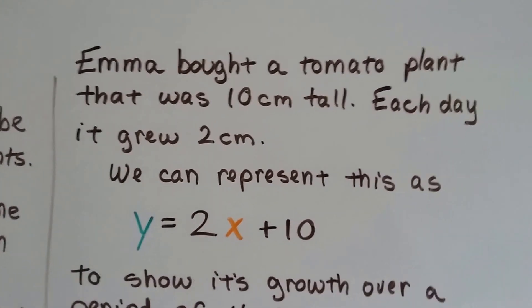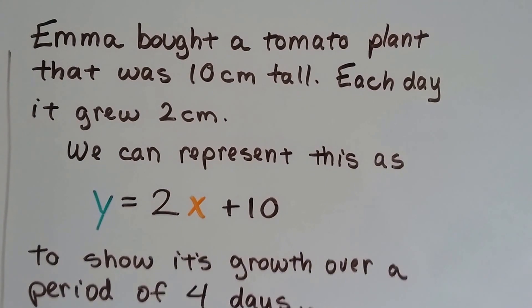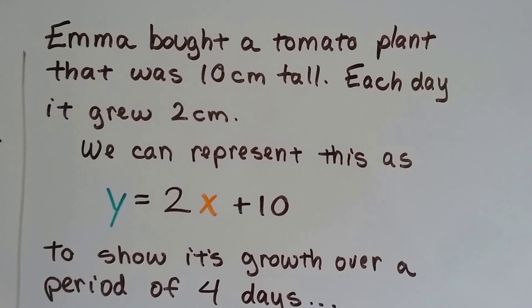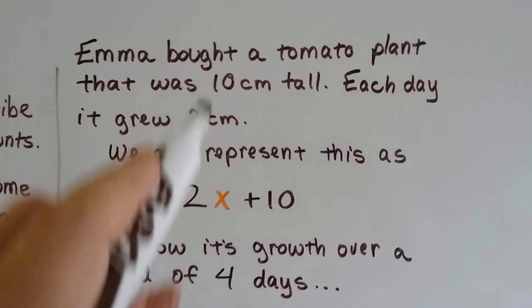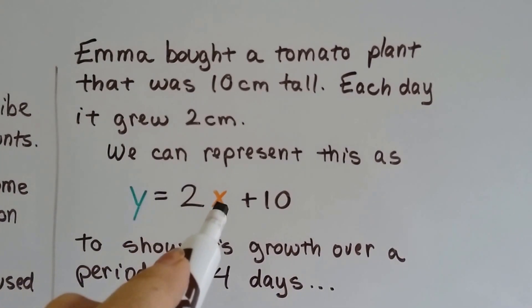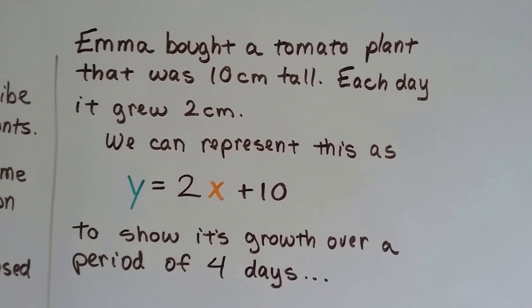Emma bought a tomato plant that was 10 centimeters tall, and each day it grew 2 centimeters. We can represent this as y equals 2x plus 10. The 2 is the 2 centimeters, x is each day, and the 10 is the 10 centimeters it was when she first purchased it.